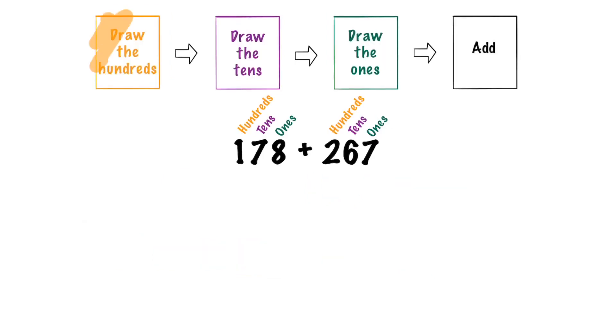Step one draw the hundreds. We have a 1 in the hundreds place so we're going to draw 100. We have a 2 in the hundreds place on our next number so we need 200. Step two is draw the tens. We have a 7 in the tens place which means we need 7 tens. The 6 in the tens place means 6 tens.